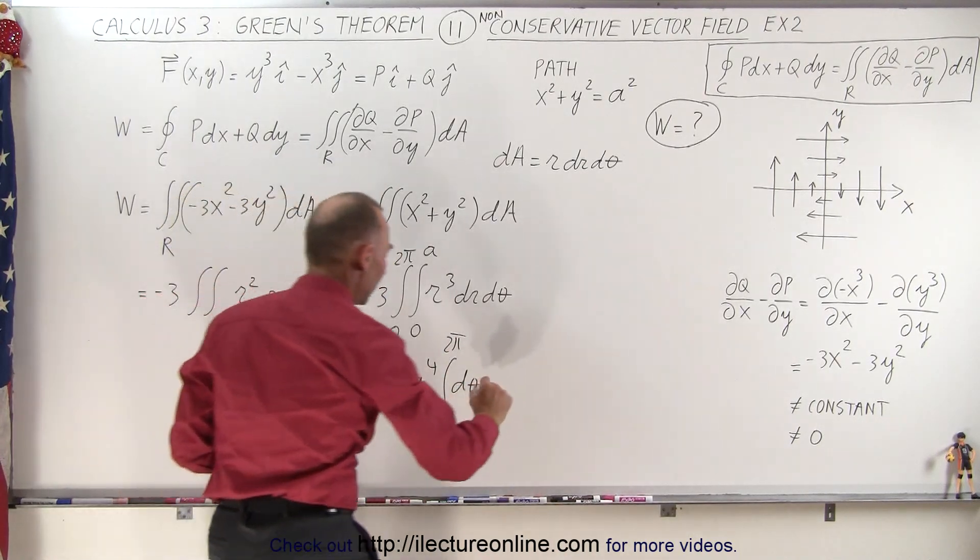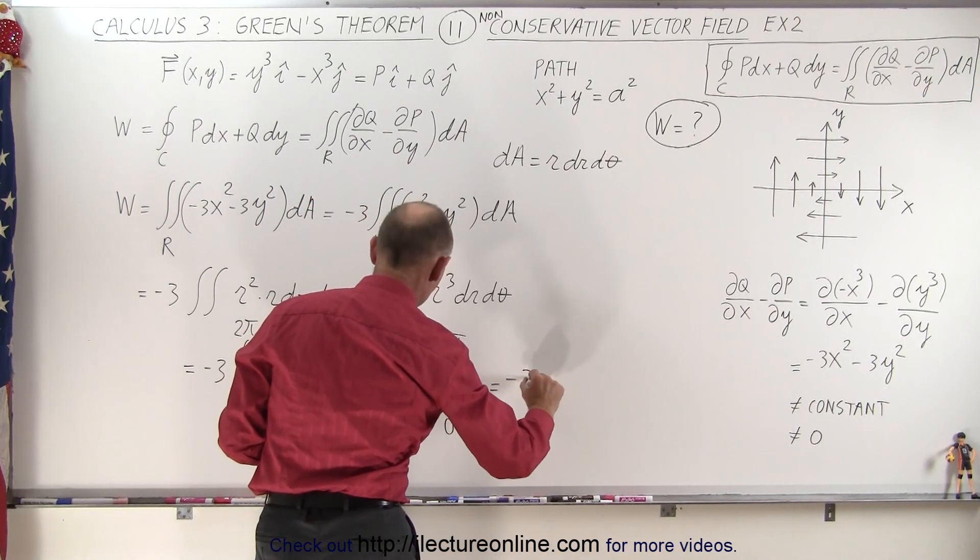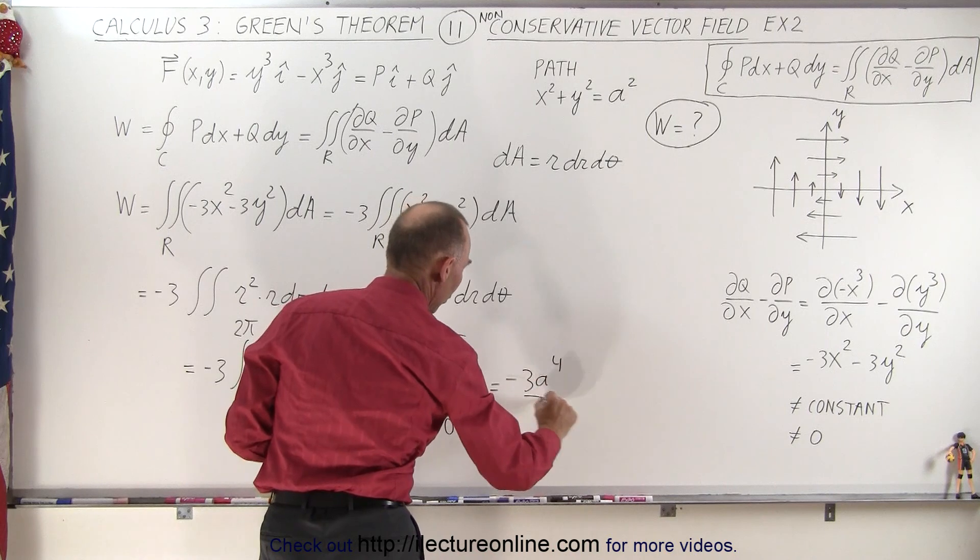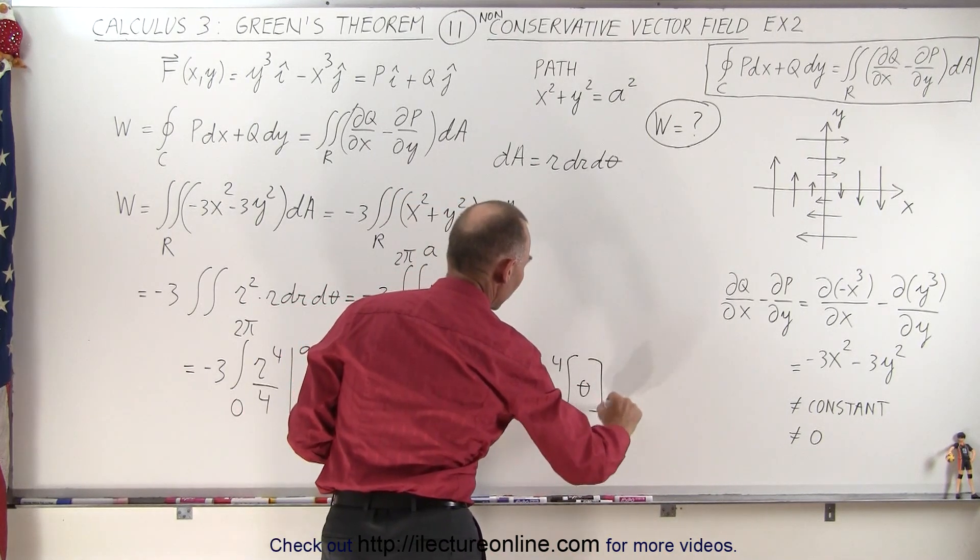And of course, integral of that is theta, so this is minus 3a to the 4th over 4 times theta from 0 to 2 pi.